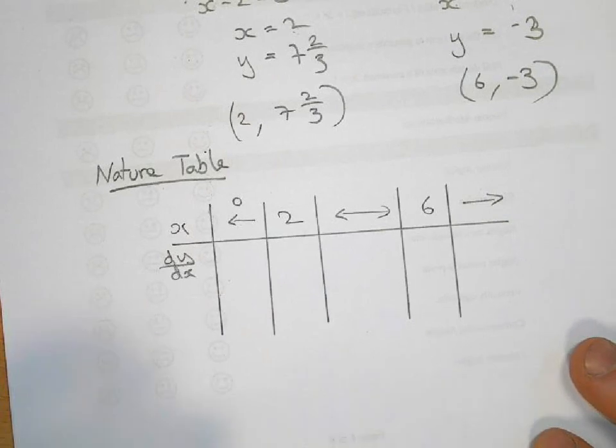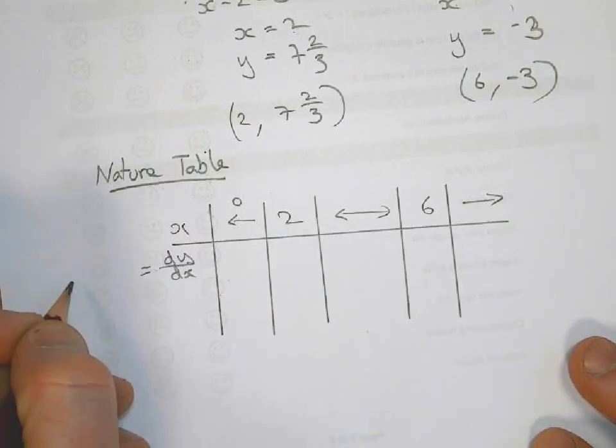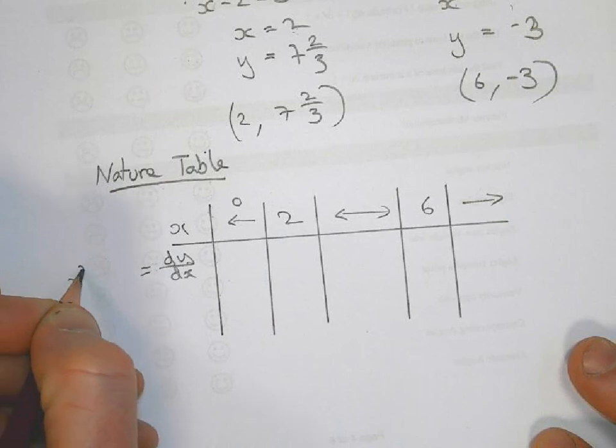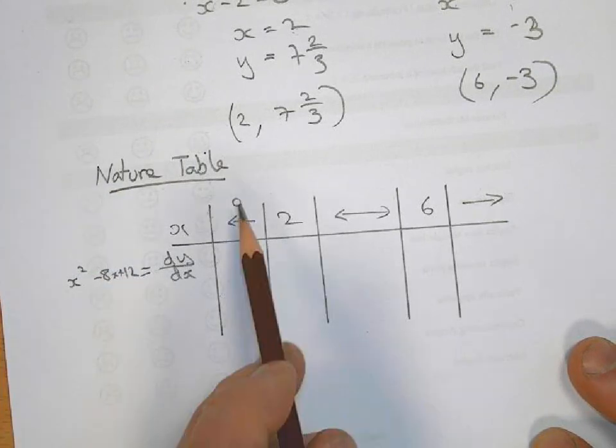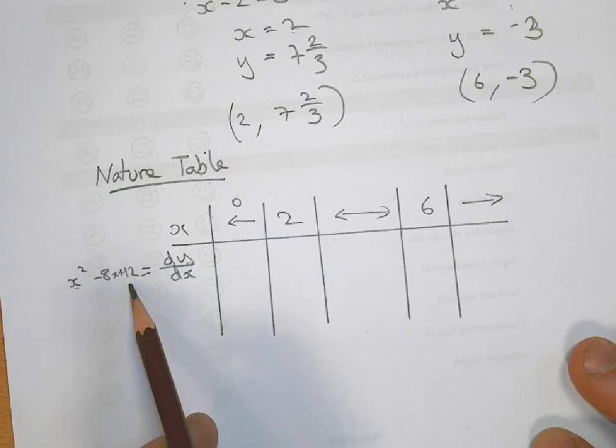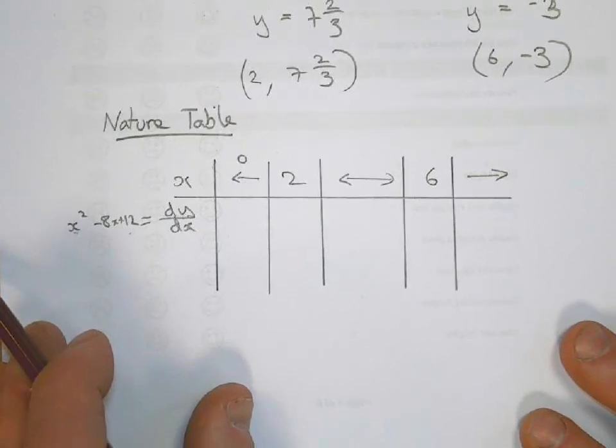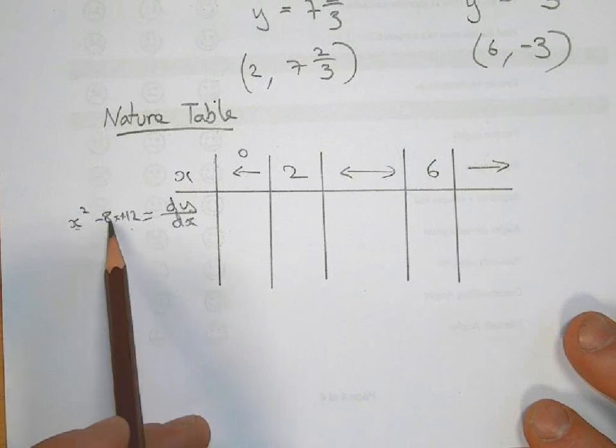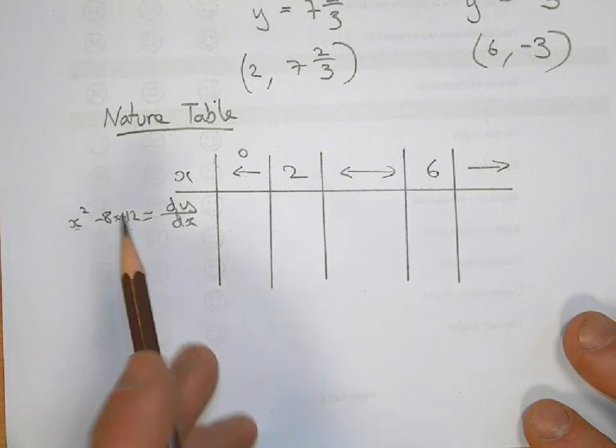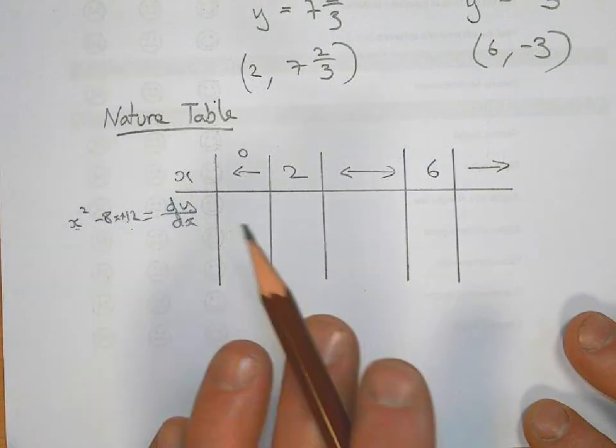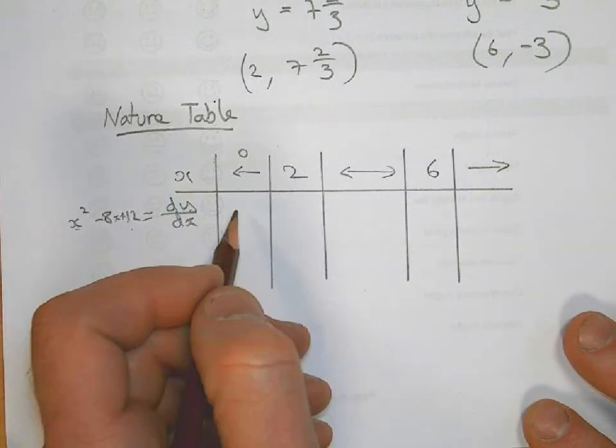And again, the function for dy/dx is x squared minus 8x plus 12. So we're going to put 0 into here. And when you put 0 into x squared minus 8x plus 12, we end up with just 12. And 12 is a positive answer. It doesn't matter what number it is, it's just the fact that it's a positive answer. So we put a plus there.